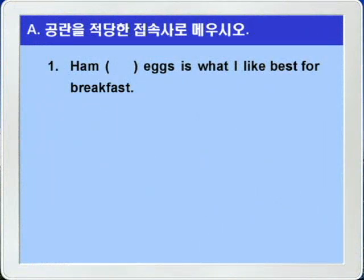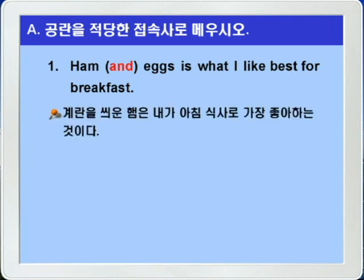Ham, blank, eggs is what I like best for breakfast. The blank should be filled with the conjunction 'and', which represents a single concept. Ham and eggs — 계란을 씌운 햄은 내가 아침 식사로 가장 좋아하는 것이다. (Ham and eggs is what I like best for breakfast.)